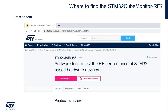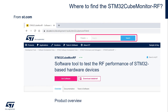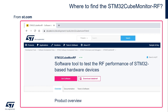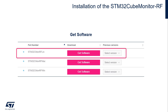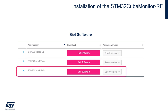Where do you find the STM32 QMonitor RF? Very easy — on our website at ST.com. On the search menu, search for STM32 QMon RF, as shown here. Make a search, that will bring you to this page, and then click on Get Software. This will bring you to this location, where you can select the Linux version, Mac version, or Windows version.